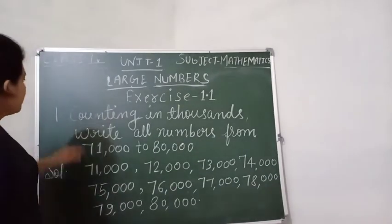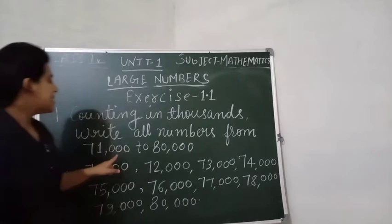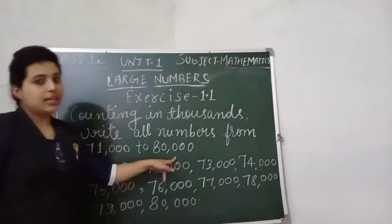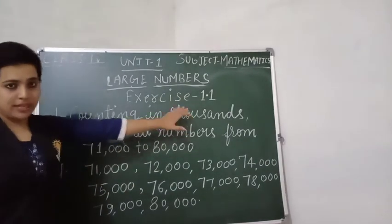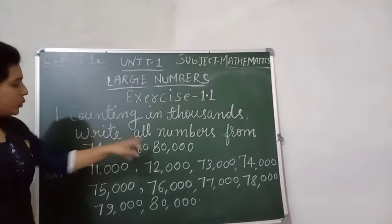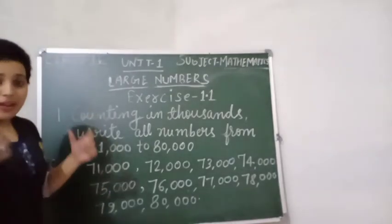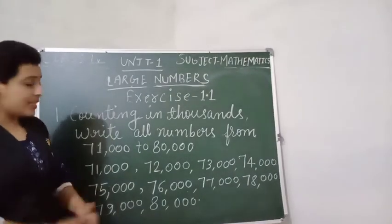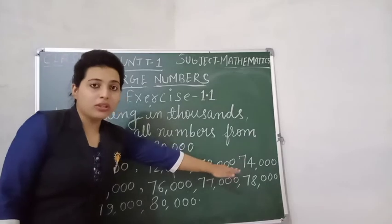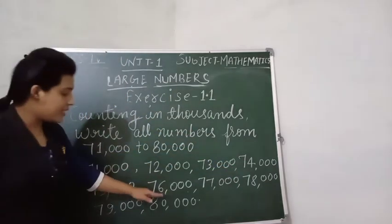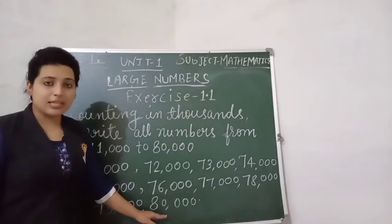In question I, counting in thousands, write all numbers from 71,000 to 80,000. So here we will write numbers in thousands: 71,000, then 72,000, 73,000, 74,000, 75,000, 76,000, 77,000, 78,000, 79,000, and at last 80,000.